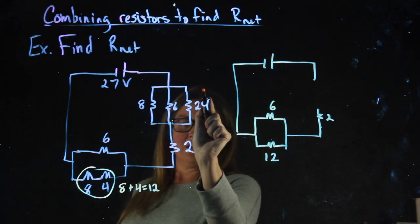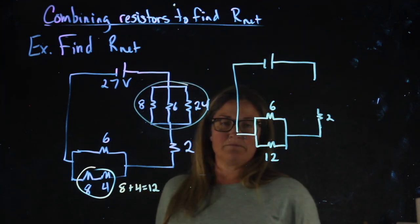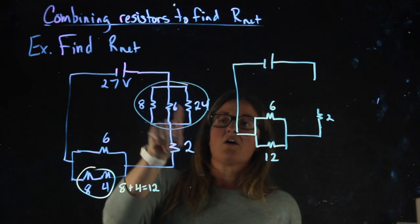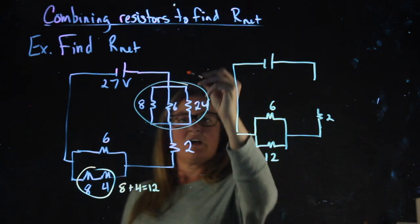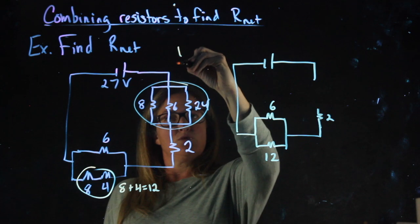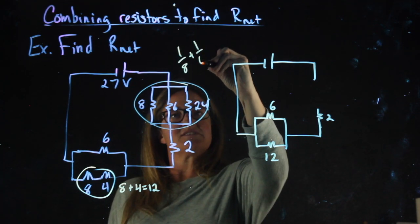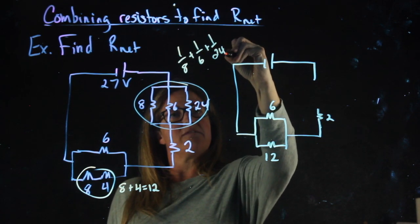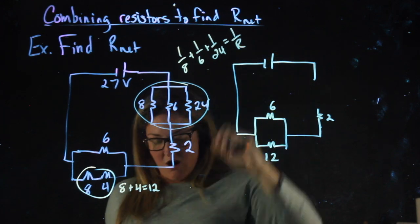Additionally, I'm going to combine these three. These three are all in parallel with one another. So when I add them, I'm going to do 1 over 8 plus 1 over 6 plus 1 over 24 equals 1 over r.